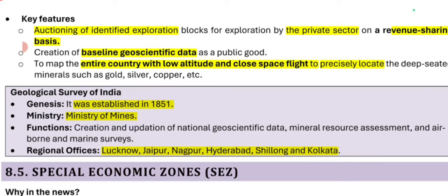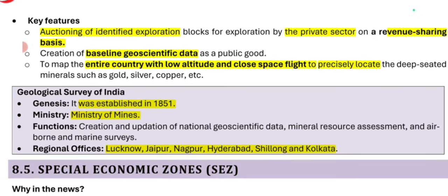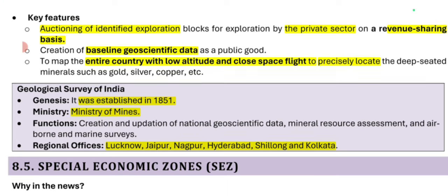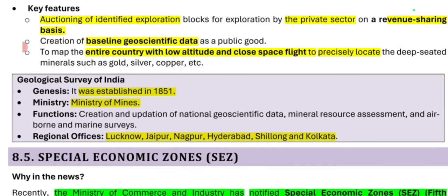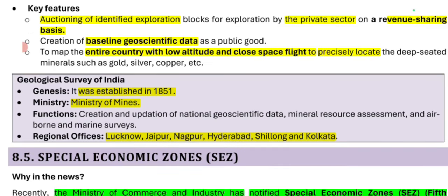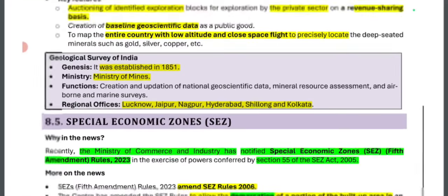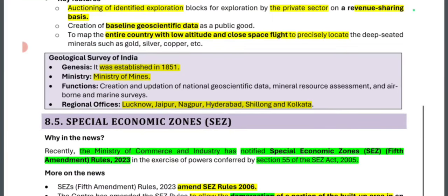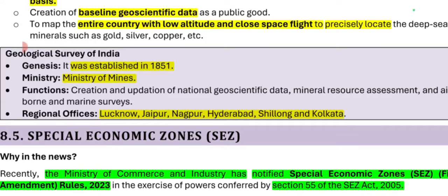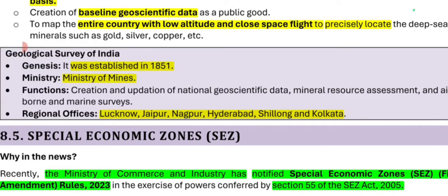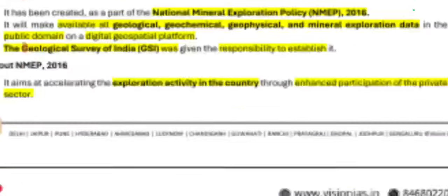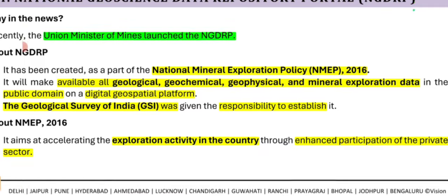Key features include: all identified blocks will be auctioned for exploration through the private sector on a revenue-sharing basis. There are two types of sharing bases — revenue sharing and profit sharing. Exploration data is treated as a public good. The Geological Survey of India under the Ministry of Mines will use this to precisely locate deep-seated minerals across the country.